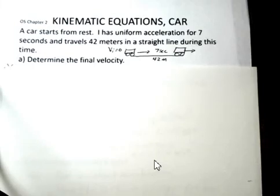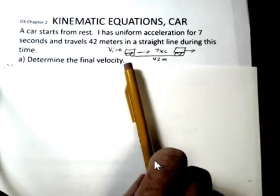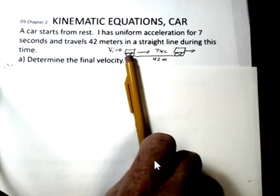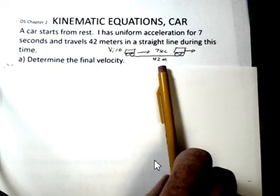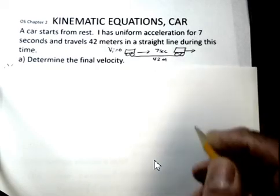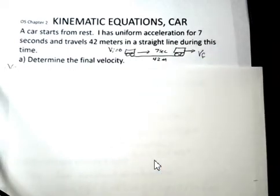This example problem deals with a car starting from rest. The car has uniform acceleration that lasts for 7 seconds. During that time, the car travels 42 meters in a straight line, illustrated by this diagram. So we're initially at rest, so v_i equals 0. We're moving for 7 seconds and we cover 42 meters, and there's some final velocity of the car at the end of this distance.